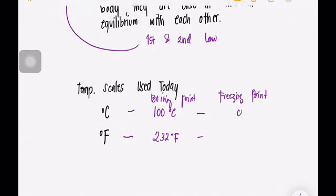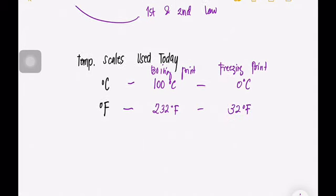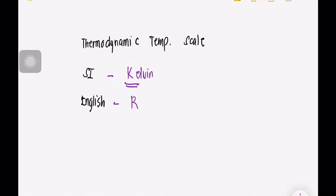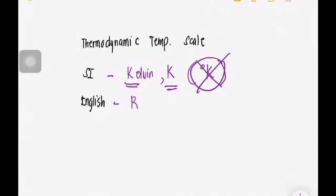Since our subject is thermodynamics, we use the thermodynamic temperature scale. In the SI system, we use the Kelvin scale, designated as K — not degree K, as the degree symbol was officially dropped from Kelvin in 1967. In the English system, we use the Rankine scale.